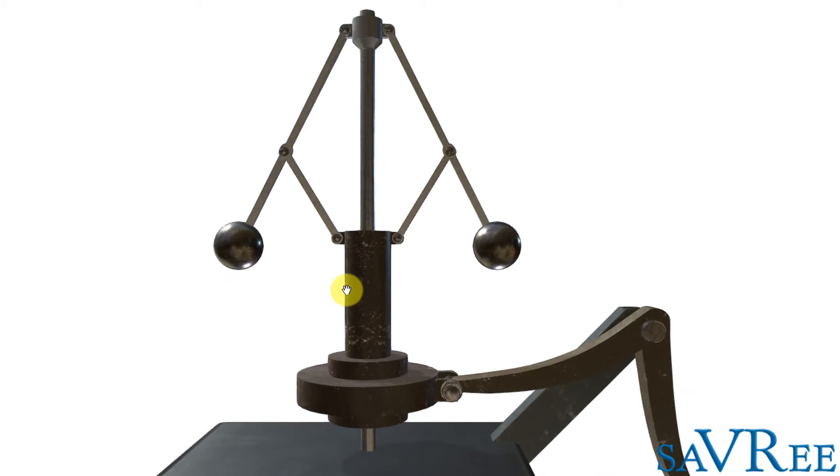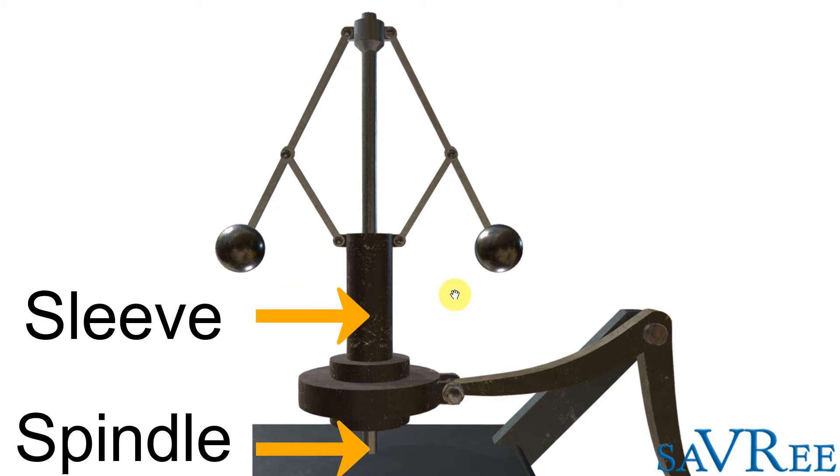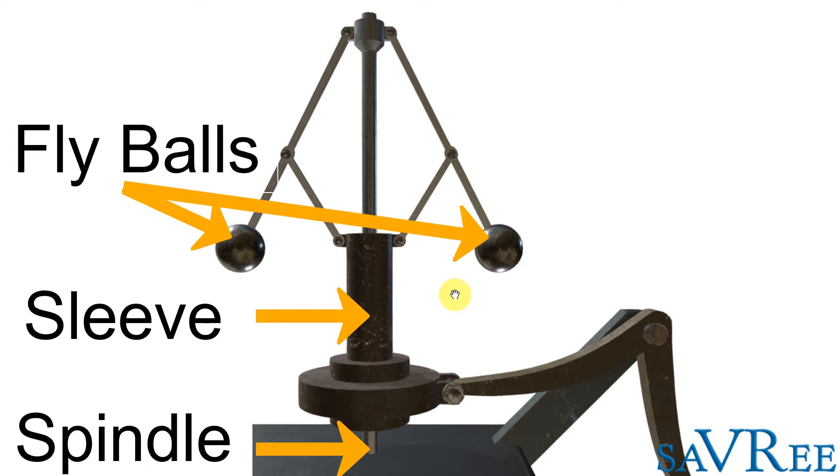Now the centrifugal governor is the whole piece of apparatus that we're looking at now. At the middle or in the middle we've actually got the spindle and on the lower section we have a sleeve or sliding sleeve. On the outside the two round objects you're looking at, these are weights referred to as fly balls and then we've got two linkages and two arms.